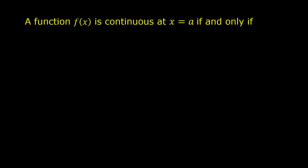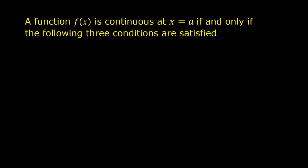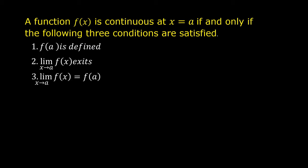Number 3. A function f of x is continuous at x equals a if and only if the following three conditions are satisfied. Number 1: f of a is defined. Number 2: the limit of f of x as x approaches a exists. Number 3: the limit of f of x as x approaches a is equal to f of a.